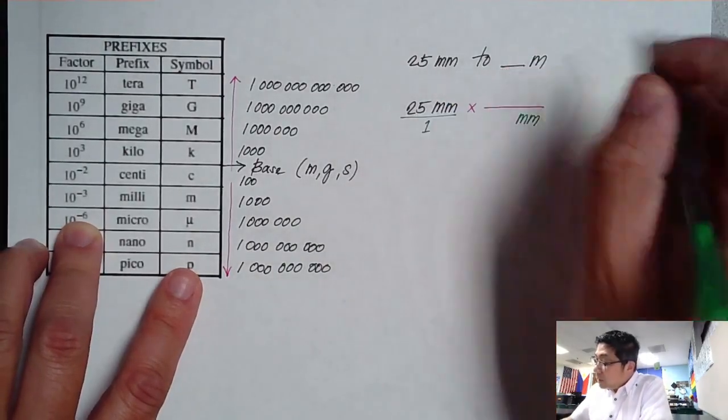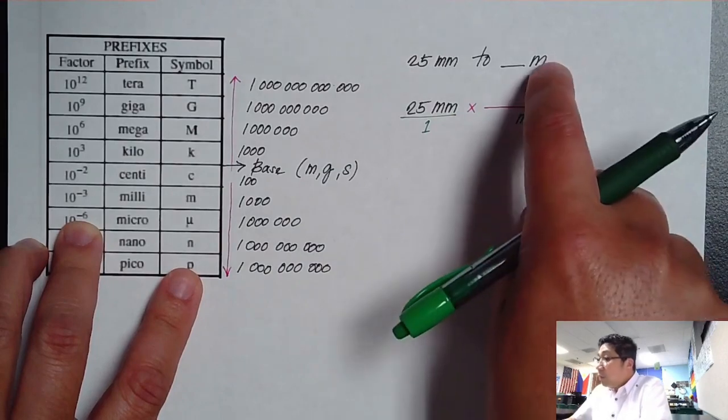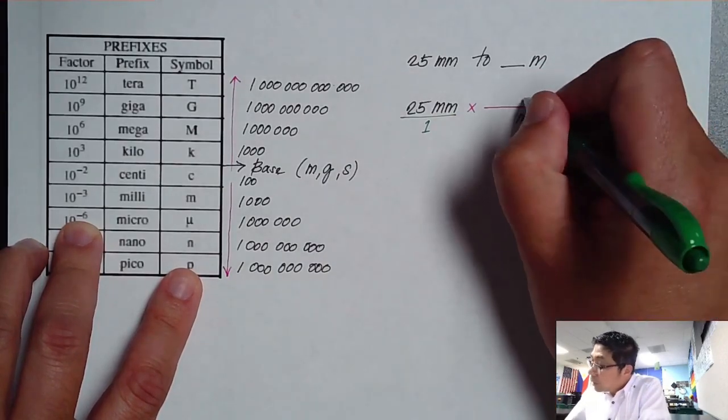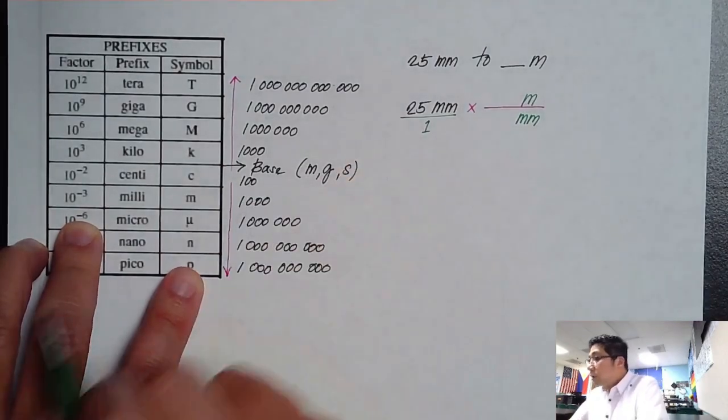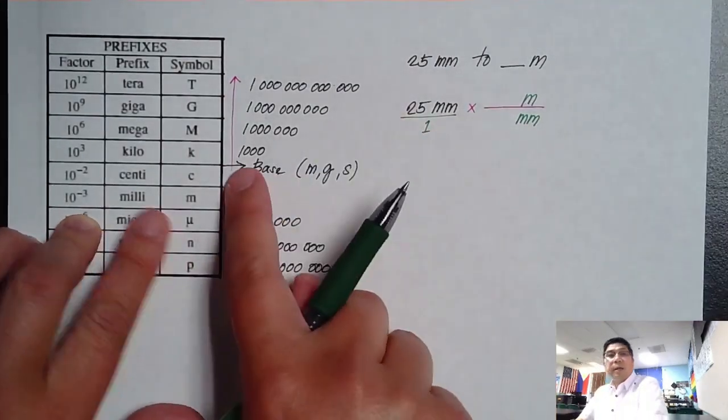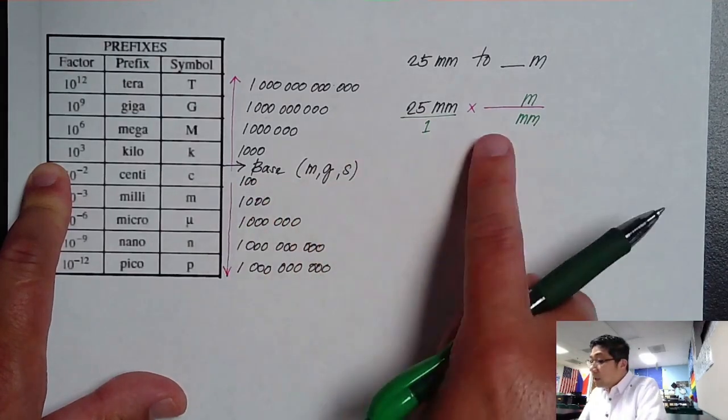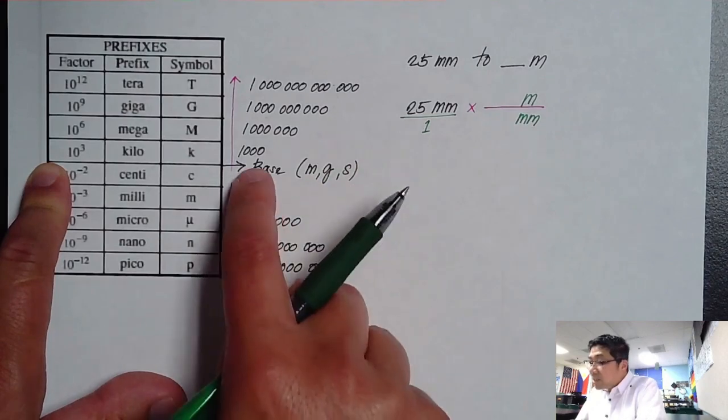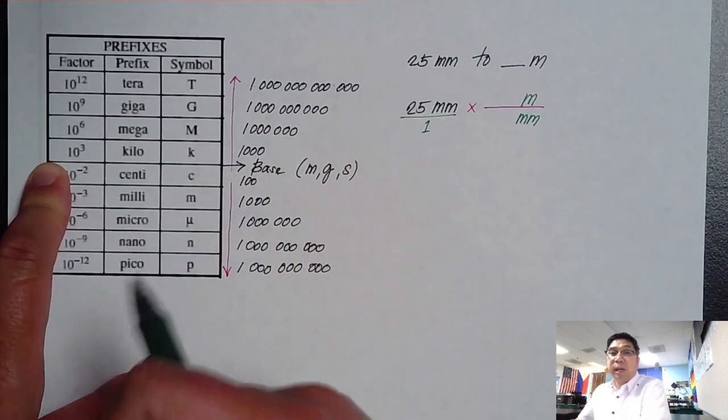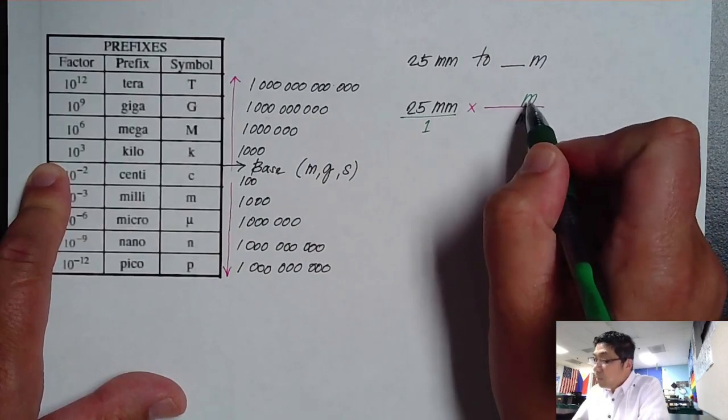So my millimeter is on the top. So therefore I will put it at the bottom. I want to convert it to meter. So therefore I'm going to place my meter over here. Now, if I'm going to look at millimeter at my table, millimeter compared to a meter, our base is meter.